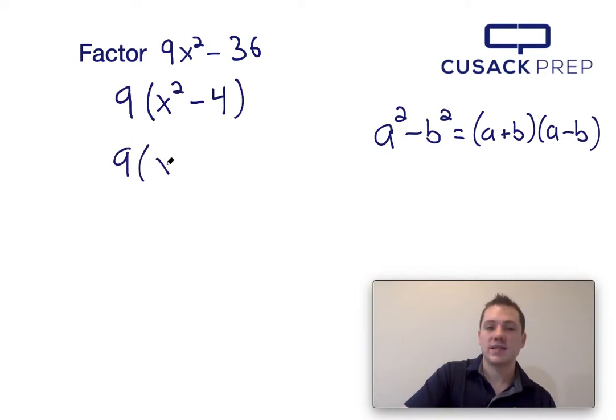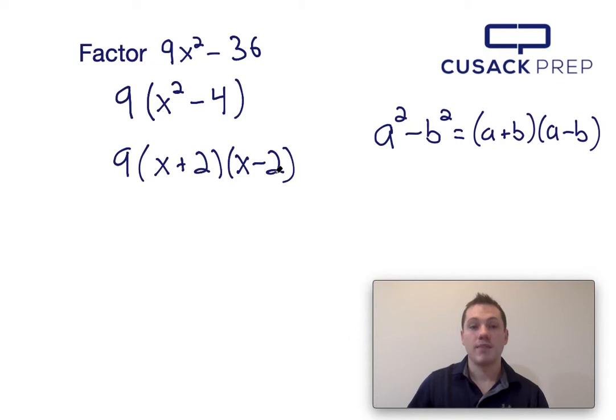So this factors into 9(x + 2)(x - 2) via the difference of squares equation. And that's how you factor 9x² - 36.